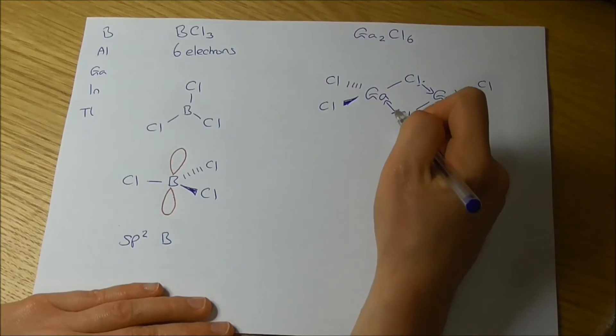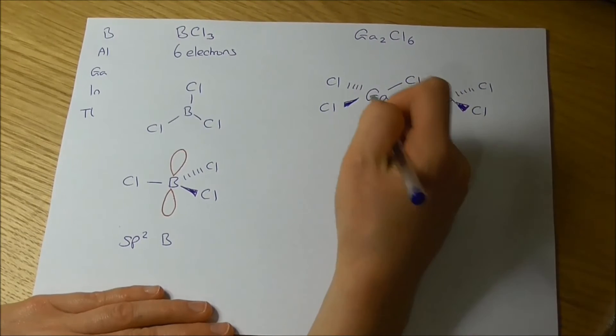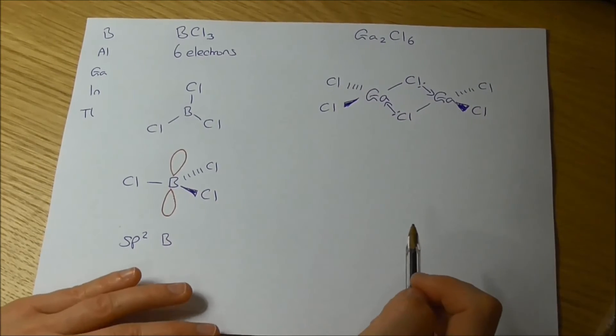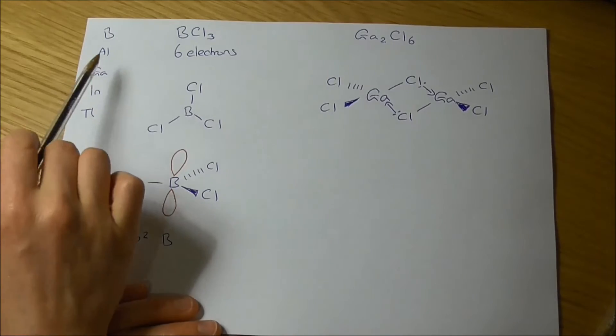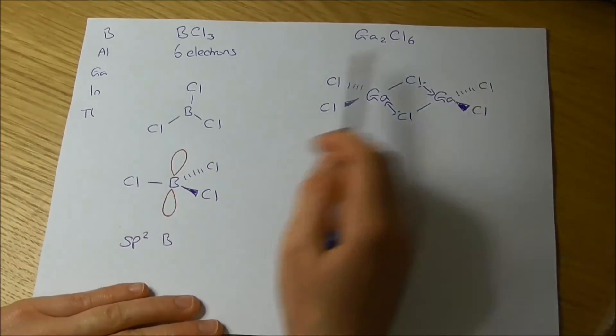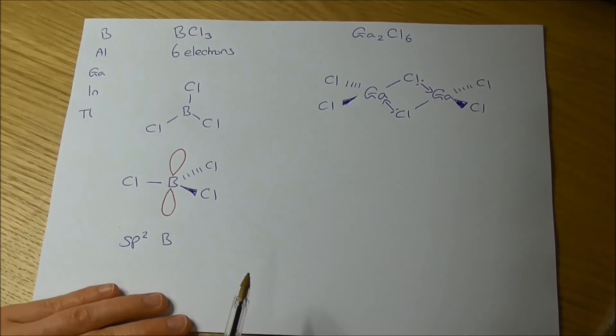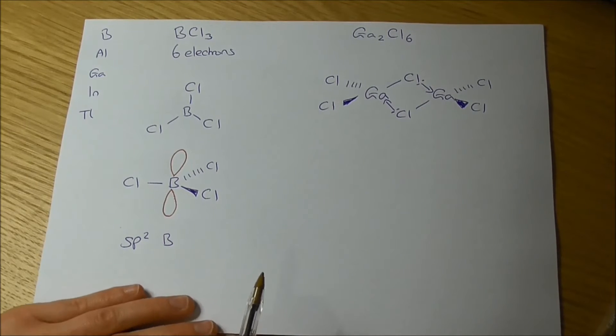So this gallium chlorine is donating into this gallium, and the chlorine on this gallium is donating into the other one, so you have this sort of cluster in the centre. And all of these other elements, apart from boron, form these dimeric species. Boron halides in fact always stay as monomers.